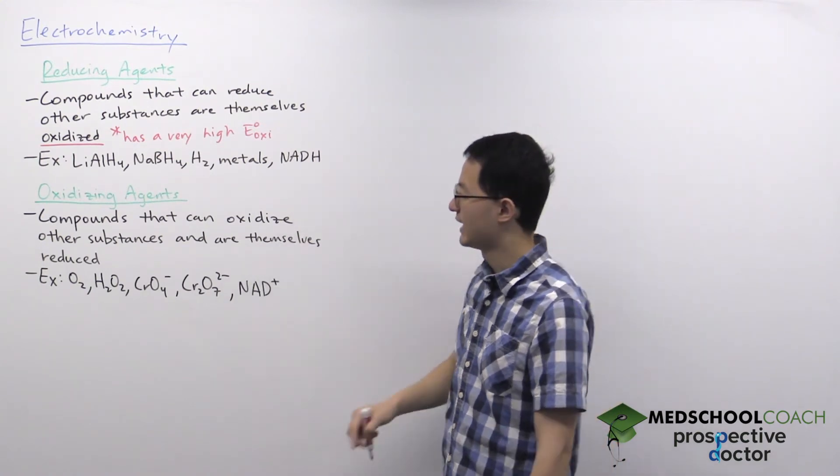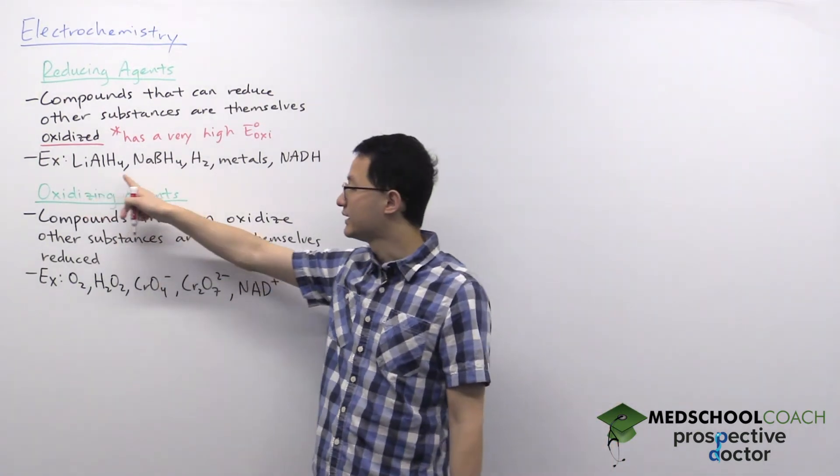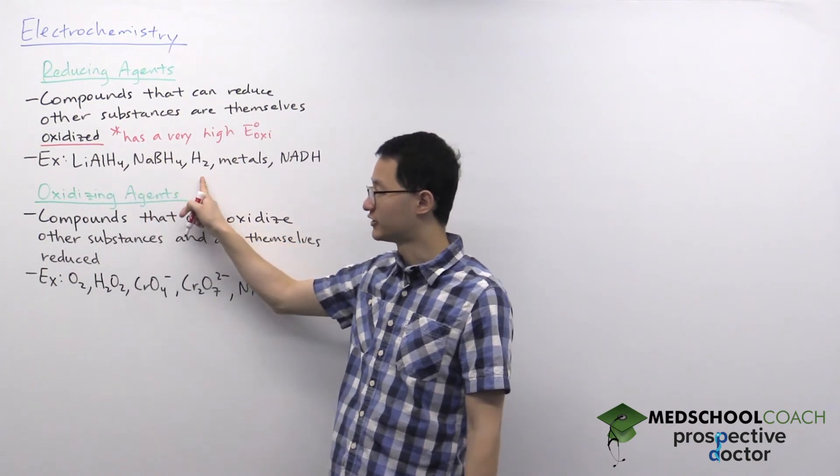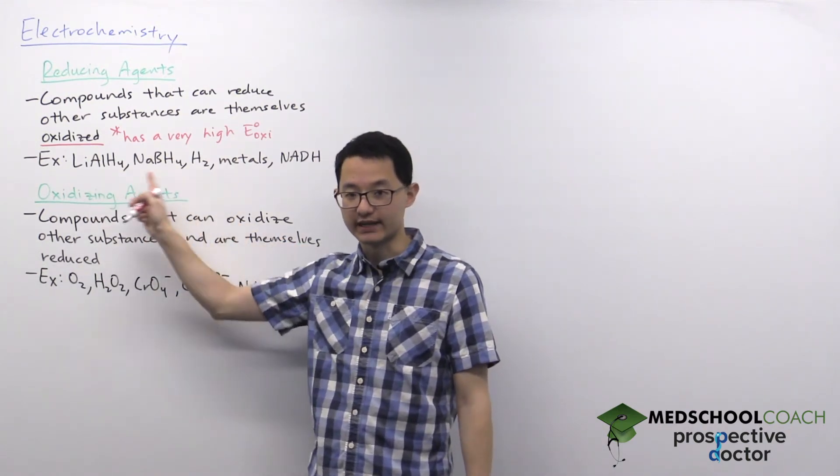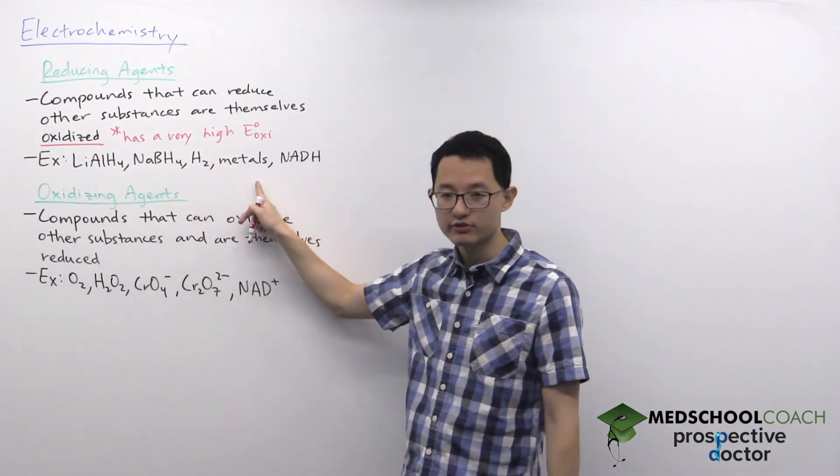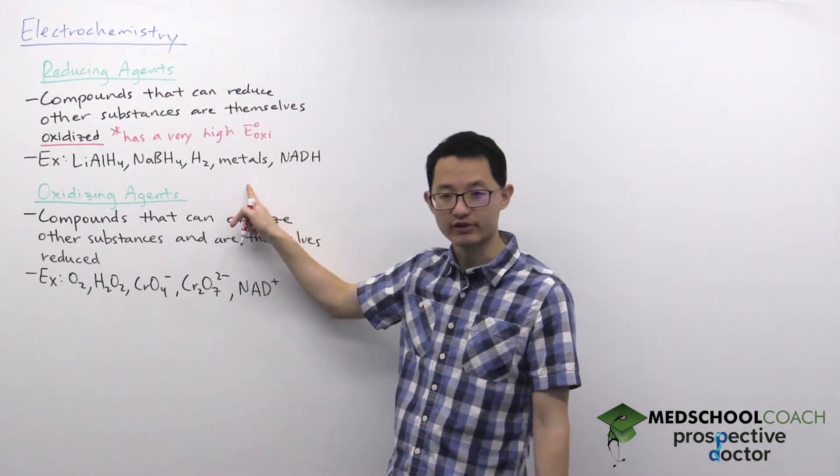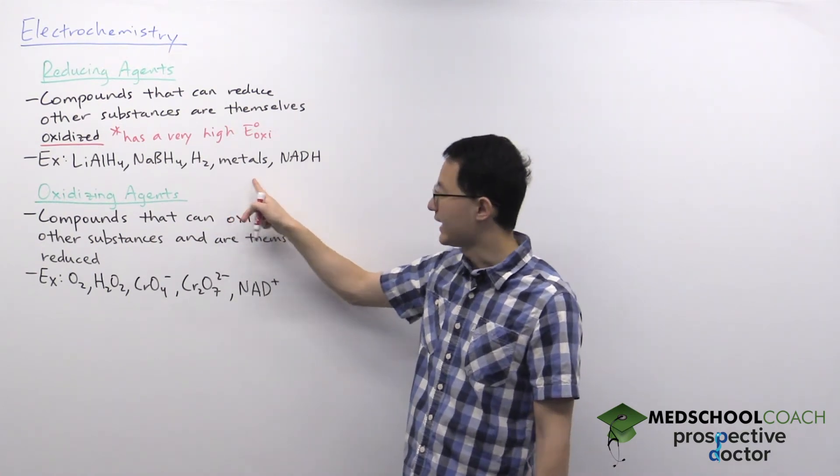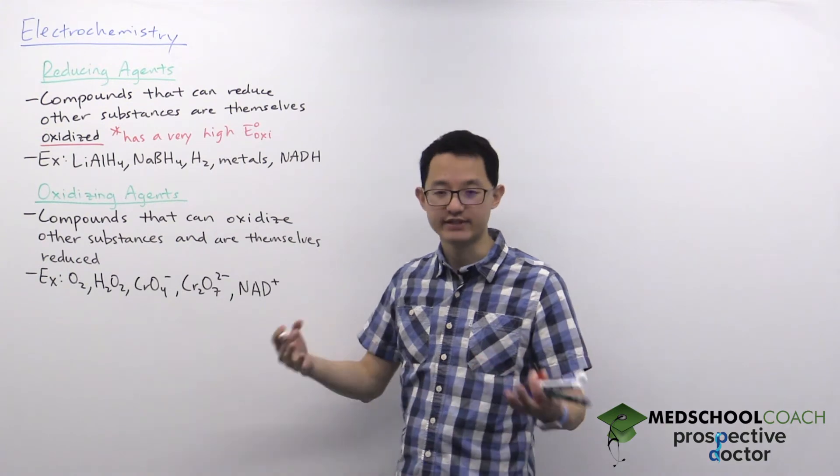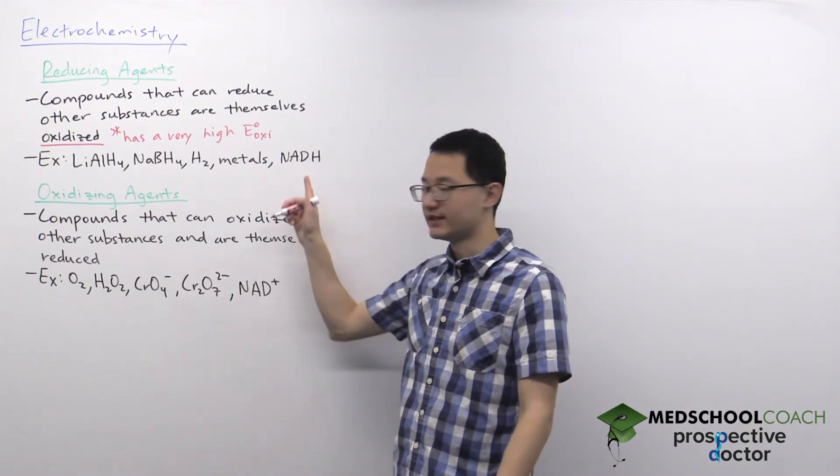Lithium aluminum hydride, sodium borohydride, and hydrogen - these are important in organic chemistry. Metals, we see them often used in general chemistry as reducing agents. And NADH, FADH2, NADPH - these are important reducing agents in biochemistry and biology.